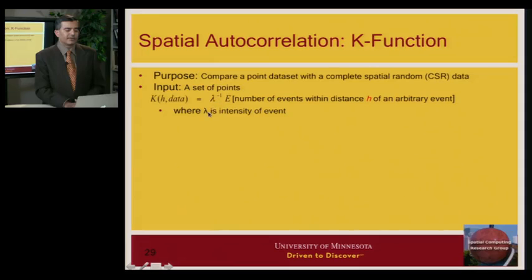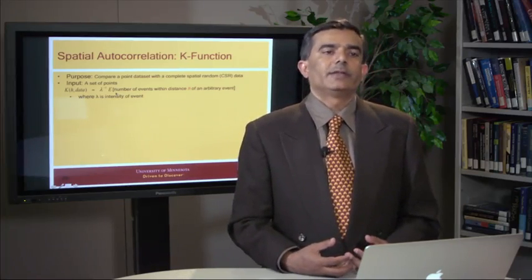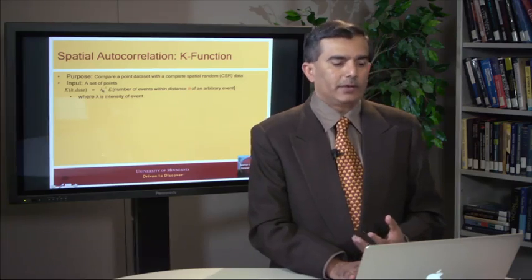The K function is essentially defined using a statistical expectation, along with a normalization function based on lambda — the intensity of the event. What we basically do is take an arbitrary point, draw a circle of radius h around it, and count how many other points fall in that circle. For cholera death data, you'd draw a circle around each death location with radius h and count how many other points fall within it. Then you take the average across all points — that is the statistical expectation.